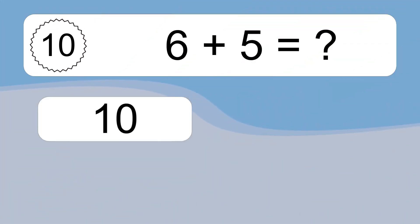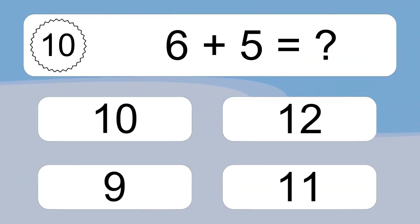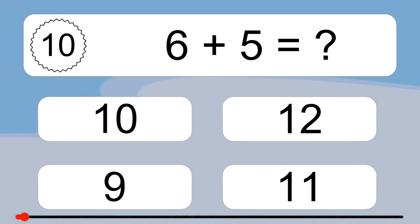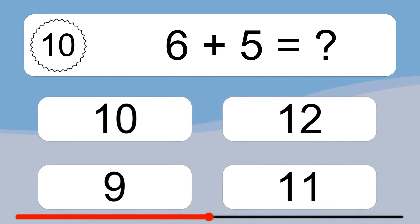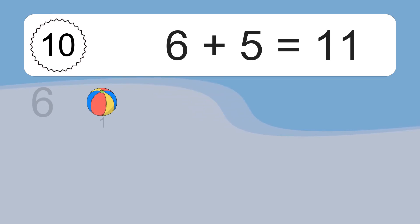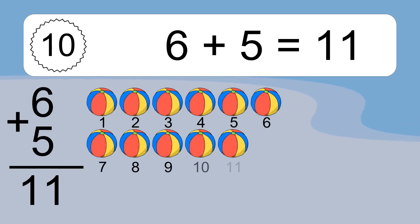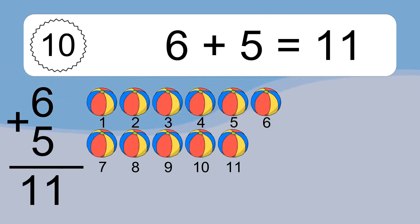6 plus 5 equals what? 6 plus 5 equals 11. Let's count it: 1, 2, 3, 4, 5, 6, 7, 8, 9, 10, 11.